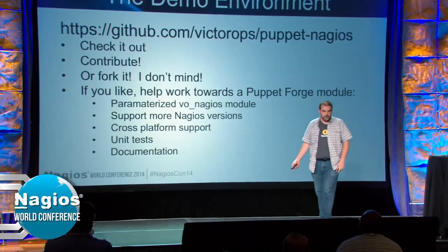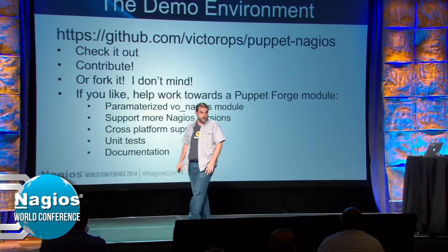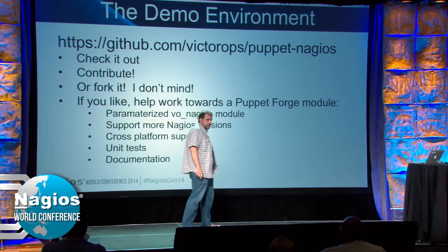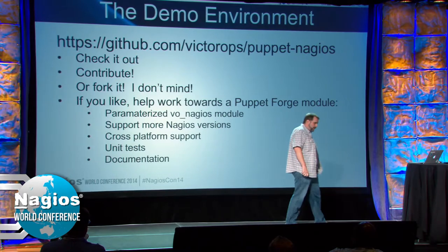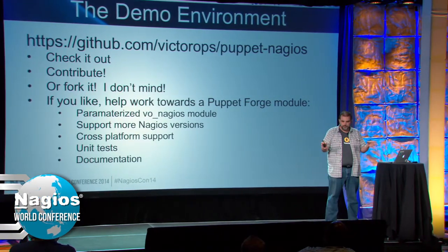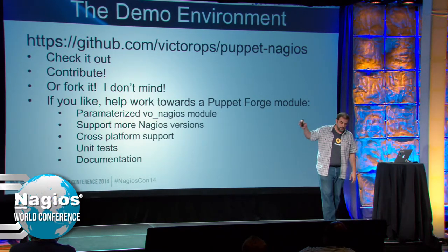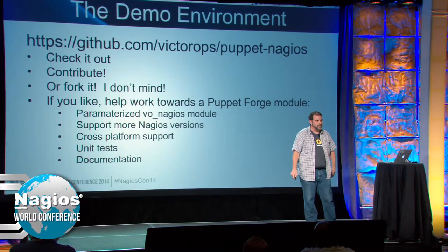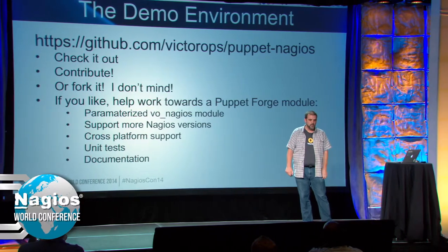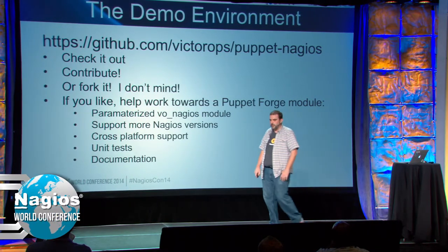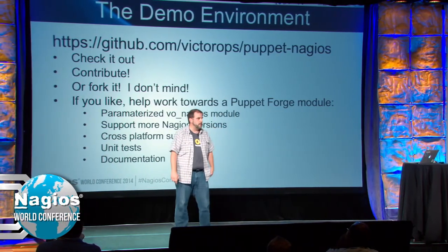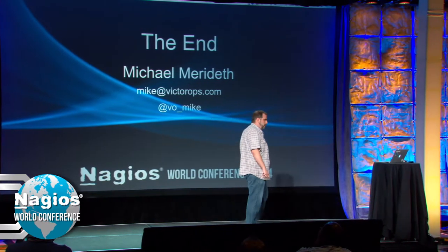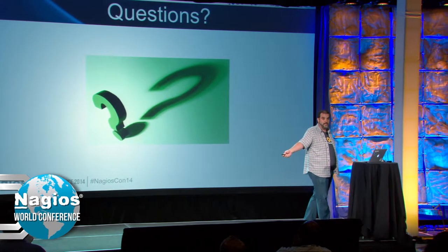The demo environment is available on GitHub at /victorops/puppet-nagios. Please check it out. If it looks suitable for your environment and you want to hack on it, contribute or fork — I just hope you get some use out of it. I'm working to make it a Puppet Forge-worthy module with better parameterization, support for more Nagios versions and operating systems beyond Ubuntu, unit tests, and better documentation. I welcome any contributions and pull requests. If you have questions, feel free to email me or find me on Twitter. Does anybody have any questions?